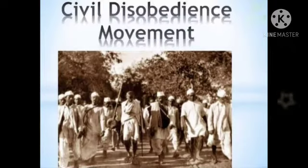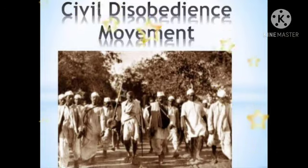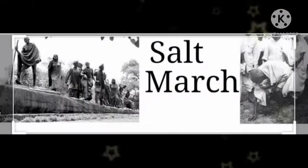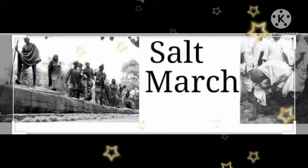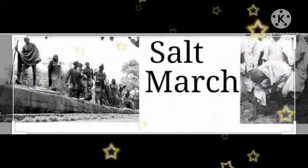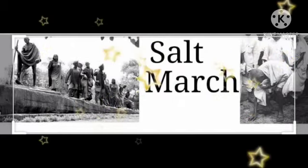After the resolution of complete independence was passed in the Lahore session, Mahatma Gandhi decided to launch the Civil Disobedience Movement. Before beginning this movement, Gandhiji put up various demands in front of the British government. One of the important demands was to cancel the salt tax and monopoly of the British government for manufacturing of salt. But because the demands of Gandhiji were rejected by the government, he decided to launch Satyagraha all over India by breaking the Salt Act.